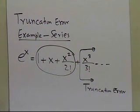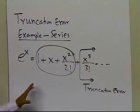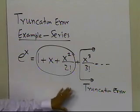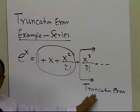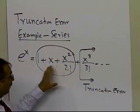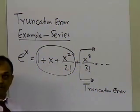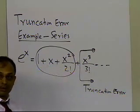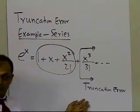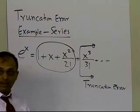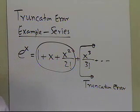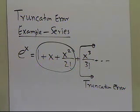So no matter how many terms you take, maybe this seems to be too big a truncation error. What you could do is take a million terms of this Maclaurin series to calculate e to the power of x. But still, the millionth term and any term after that will still be part of the truncation error.